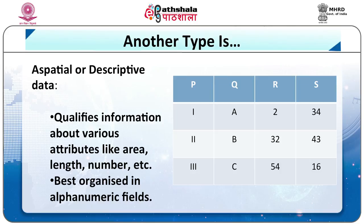For example, if you have a tree as a spatial feature, the a-spatial data tells you the name of that tree — is it Banj, Baras, Ayar, Untis? Or if there is a road, which road is it — is it National Highway 24, National Highway 44, and so on. The spatial feature conveys geometric attributes, but the value and name are given by the attribute or non-spatial data.